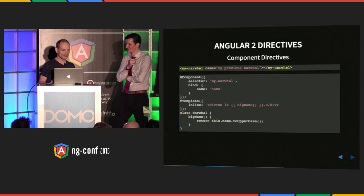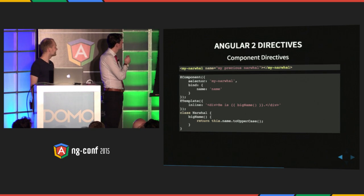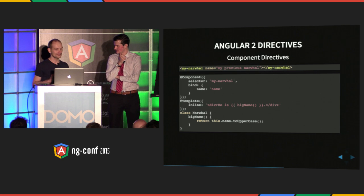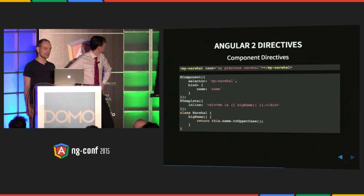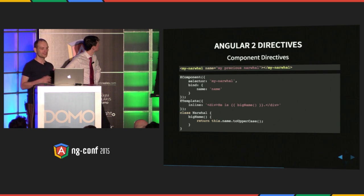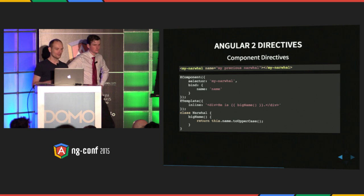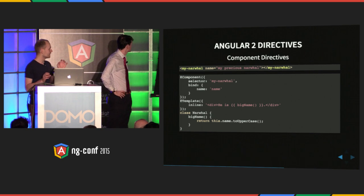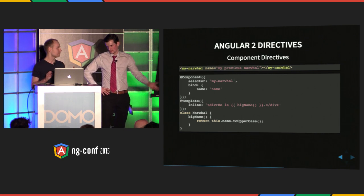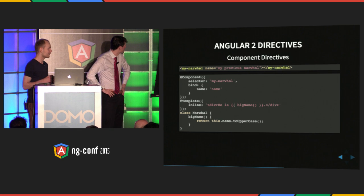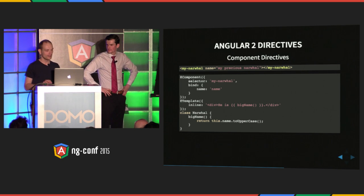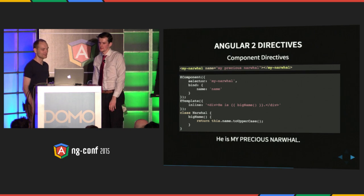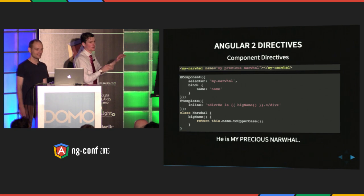This is how Angular 2 directives look — way better. We define a custom element, my-narval. It has a name attribute used in bindings. In Angular 2, the code just says what it means. We use @Component so we know we're defining a component. The selector says we're using the tag my-narval. We have a bind property defining the bindings — the name attribute is bound to the name property of the component. We use @template with inline HTML. We use the class instead of scope, which is great.